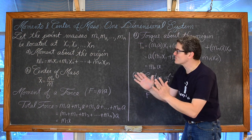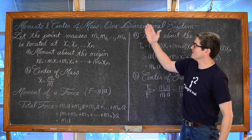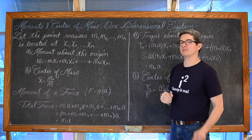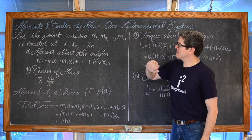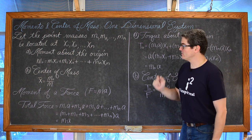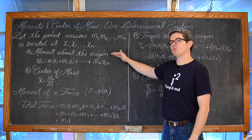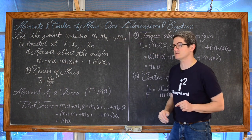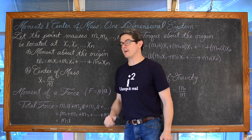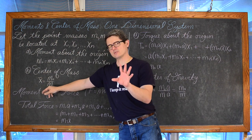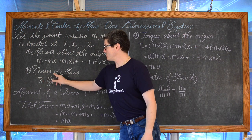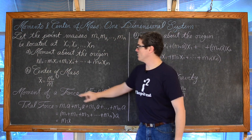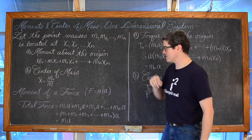Let the point masses m sub 1, m sub 2, up to m sub n be located at x sub 1, x sub 2, up to x sub n. The moment about the origin is again the sum of the products of all of those point masses and their distance away from the origin, and the center of mass x-bar — on a one-dimensional system — is equal to m sub 0, the moment about the origin, divided by the total mass of the system.